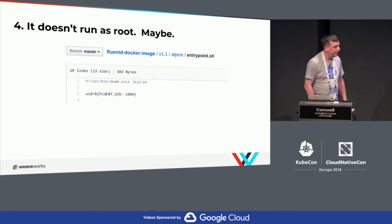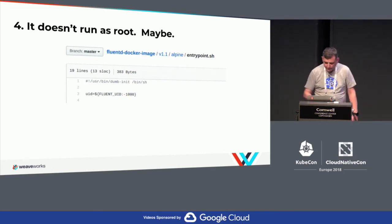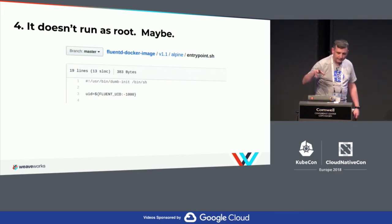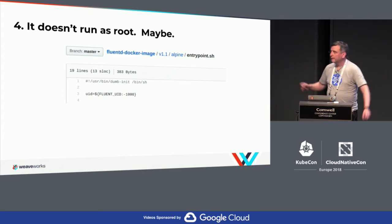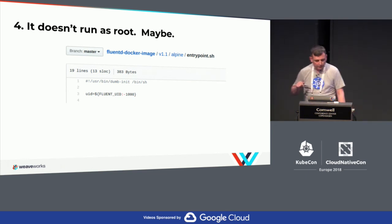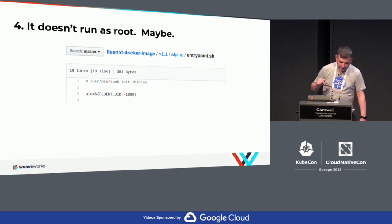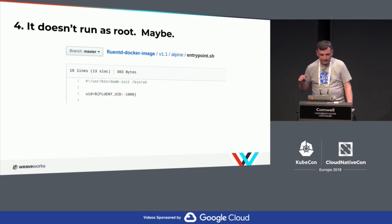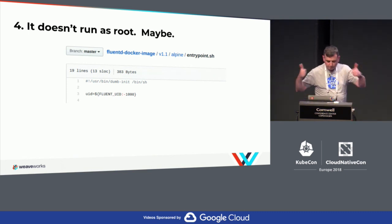Number four: it doesn't run as root. So this is the current FluentD Docker image — it has this line where they set the UID to 1,000. Very good practice, don't run as root. Unfortunately, in a Kubernetes install, all your log files are owned by root and they're not readable by UID 1,000. As far as I can tell, the effective way to fix this is to override that variable to zero.